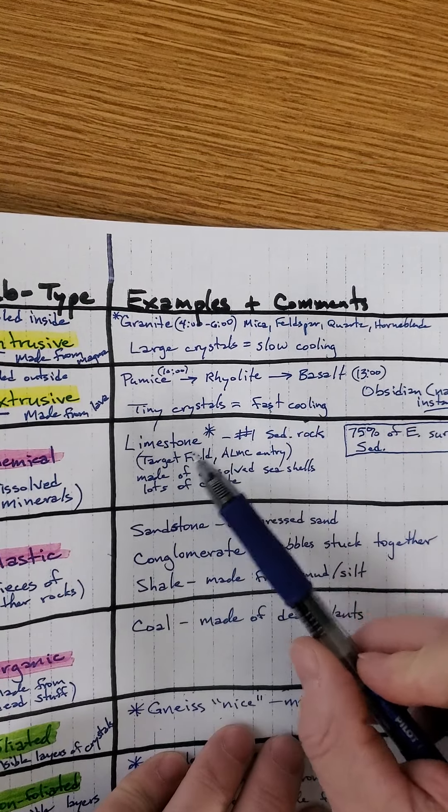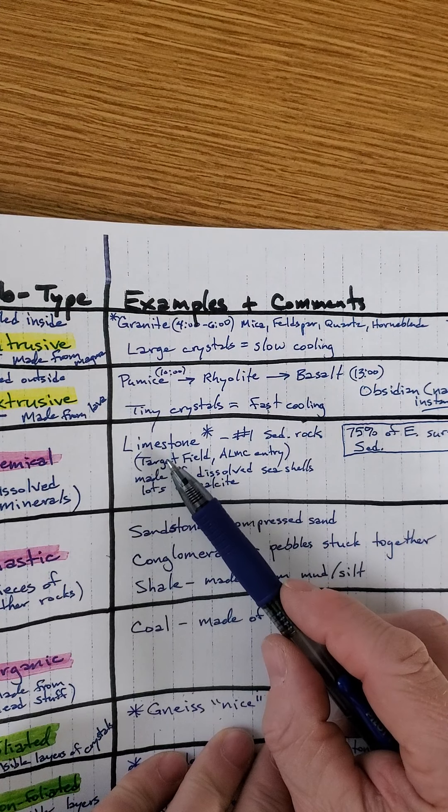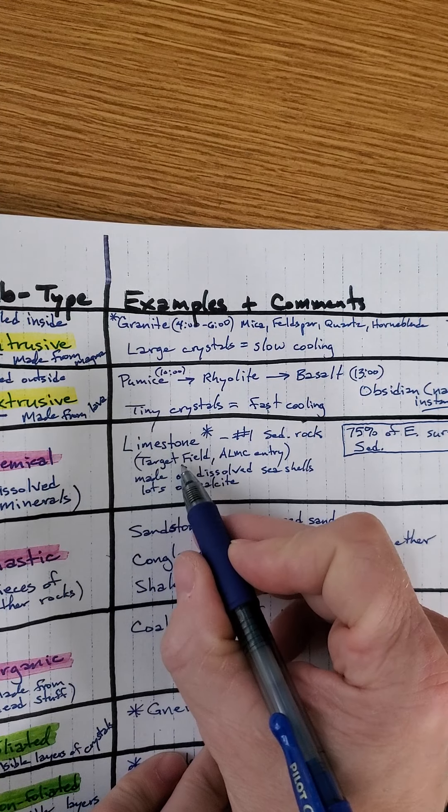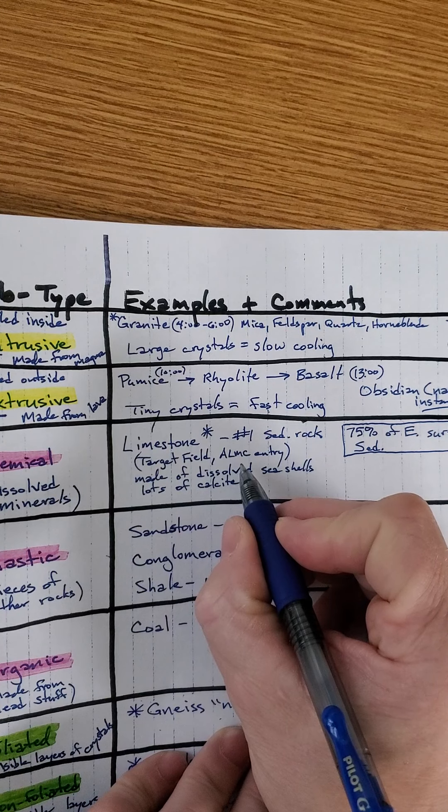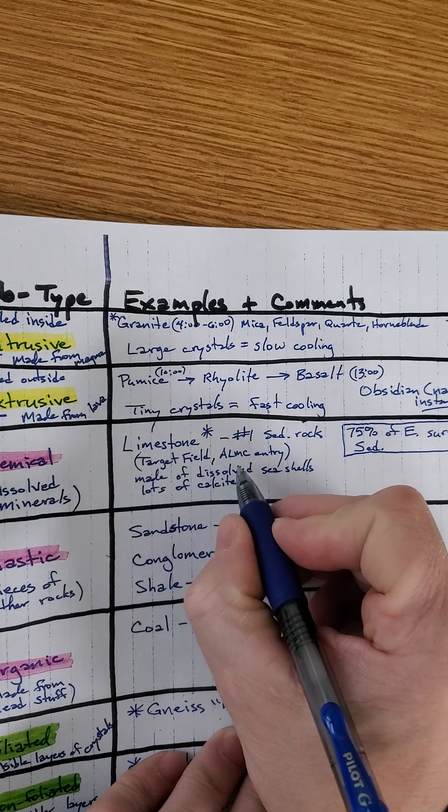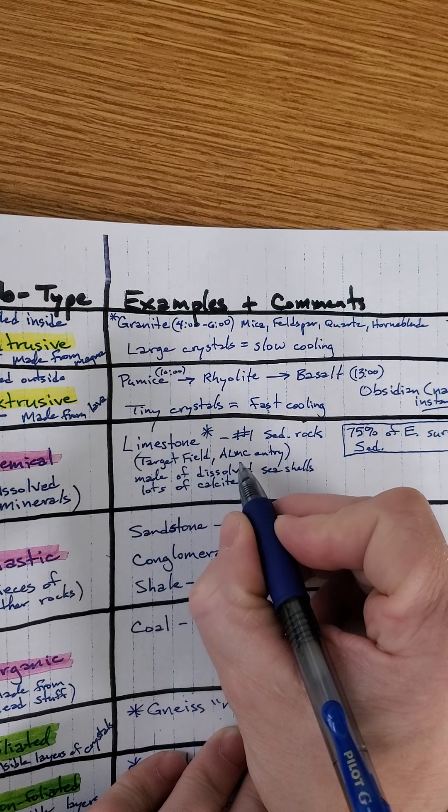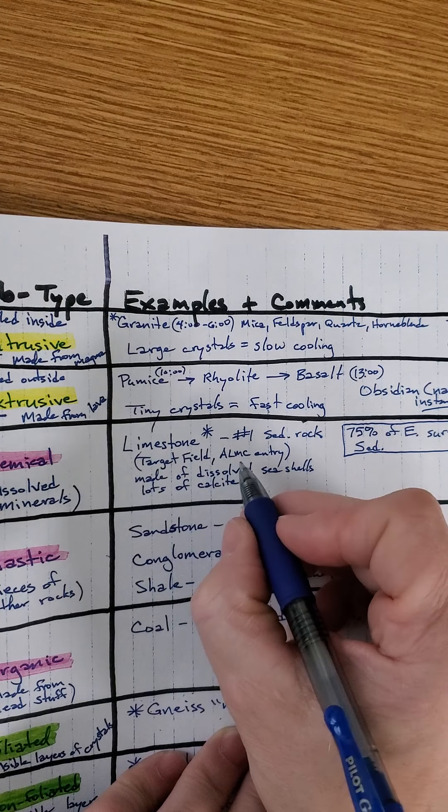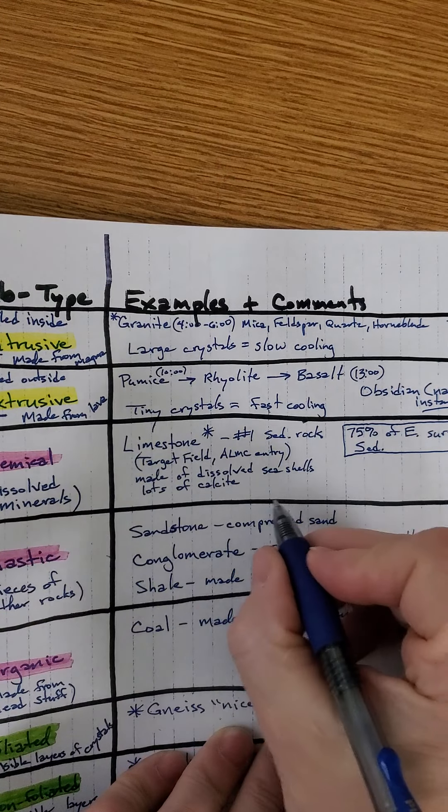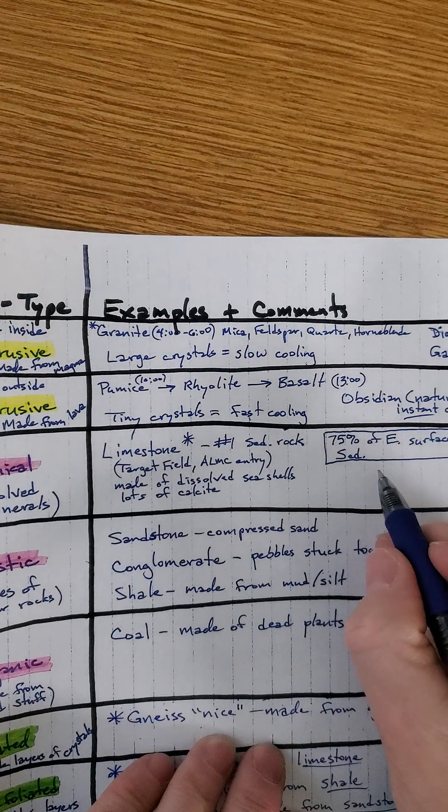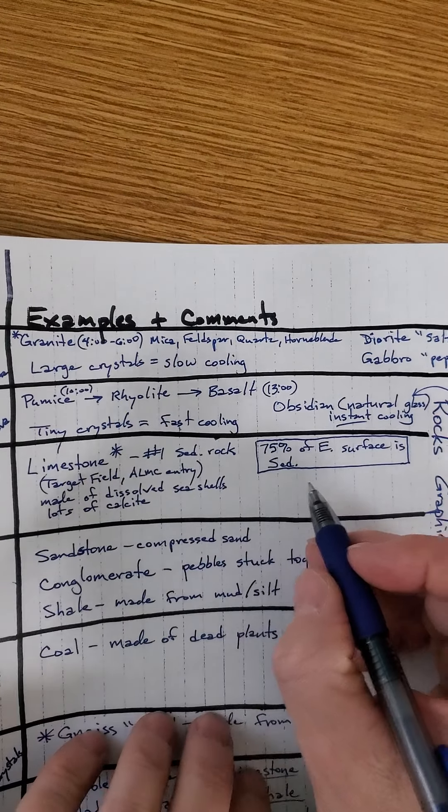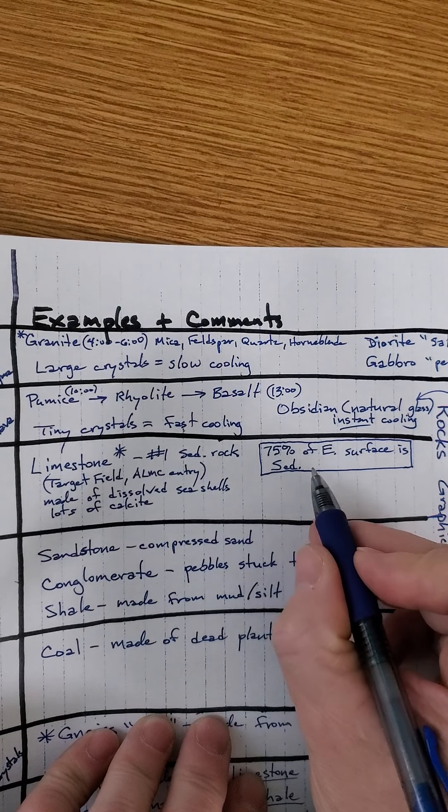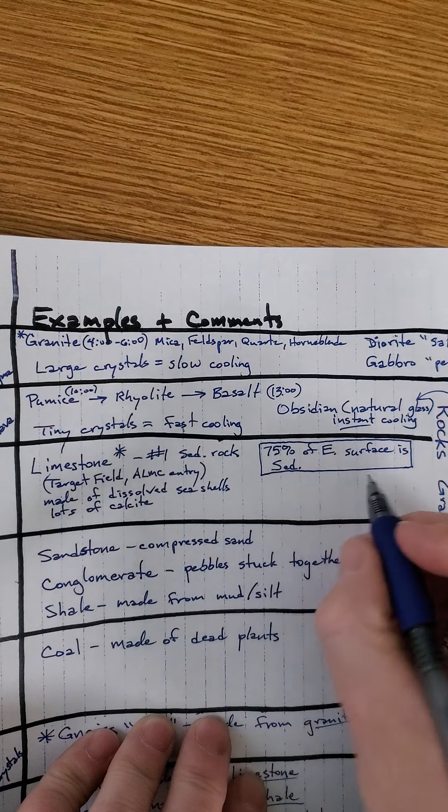The number one, most important one, is limestone. It's the number one sedimentary rock. I wanted you to remember that Target Field is made out of it, and next time you drive by the Albert Lea Medical Center, look at the new round circular entryway, where people are able to drop people off underneath the roof to keep them out of the weather. That's all Minnesota limestone. It's made out of dissolved seashells, has lots of calcite in it. I wanted you to remember that limestone is the number one sedimentary rock, and sedimentary is the number one type of surface rock. Seventy-five percent of surface rock is sedimentary. The key word there is surface.